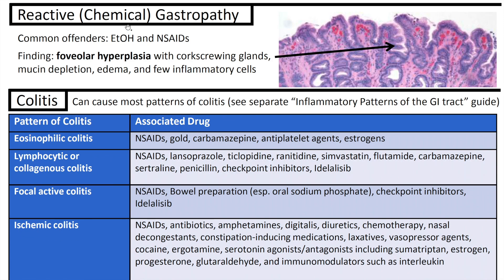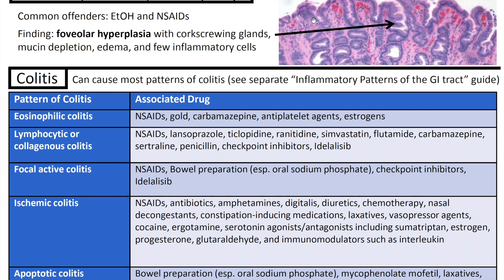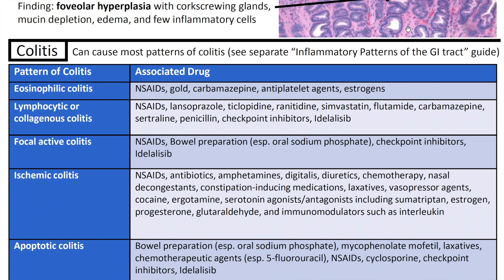Next up we've got reactive or chemical gastropathy. Common offenders include ethanol or alcohol and NSAIDs. Histologically you're going to get foveolar hyperplasia — a really hyperplastic epithelial surface with corkscrewing glands, mucin depletion, edema, and few inflammatory cells. That's reactive or chemical gastropathy.